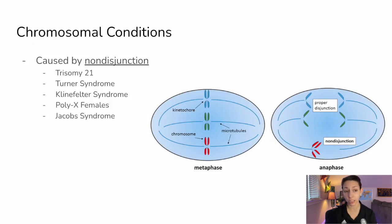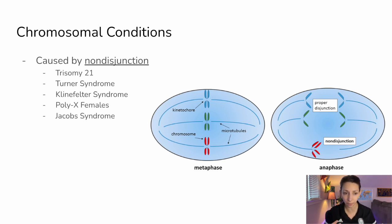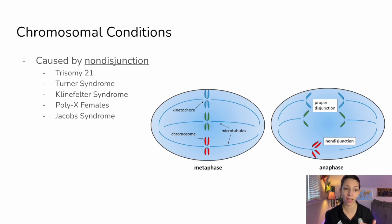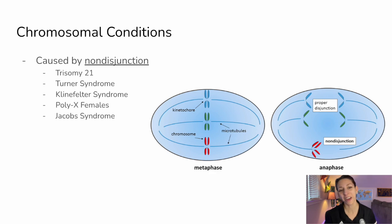Chromosomal conditions are usually caused by non-disjunction — when those chromosomes are supposed to separate, especially during anaphase 2 of meiosis, we're getting an extra chromosome ending up in the sex cell. Things like trisomy 21, Turner syndrome, Klinefelter's, PolyX, and Jacobs syndrome are all examples of chromosomal conditions.